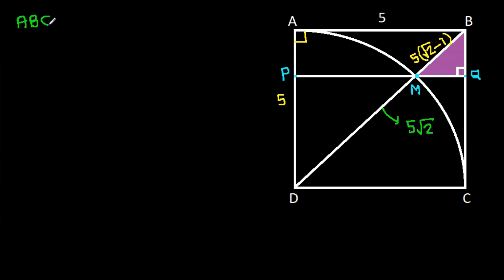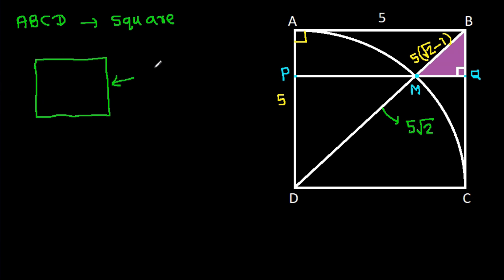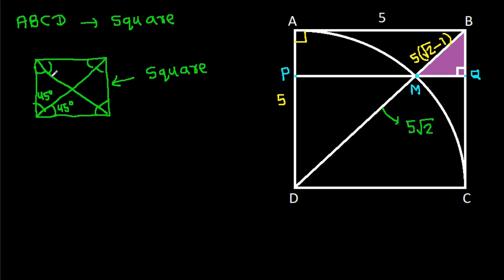We know that ABCD is a square. In any square, if we draw a diagonal, then the angles it makes will be equal and each will be 45 degrees. So here, BD is a diagonal, and this angle will be 45 degrees.